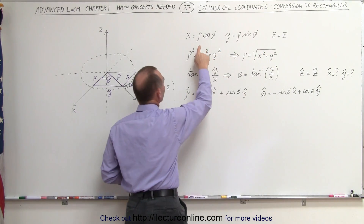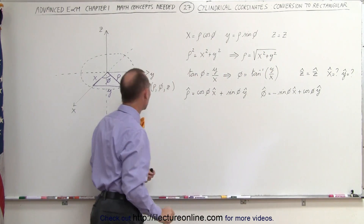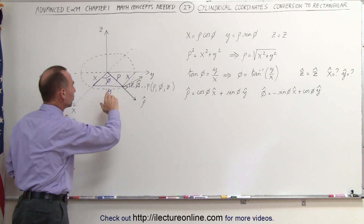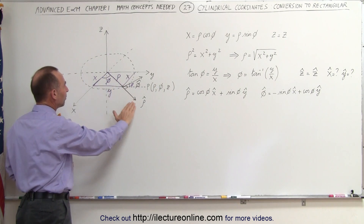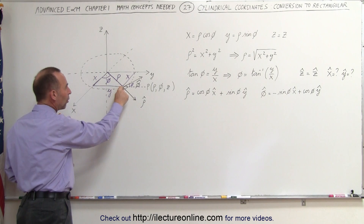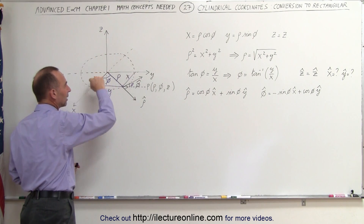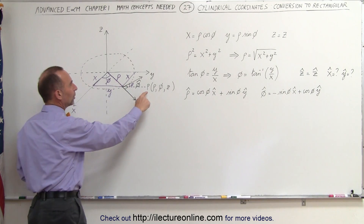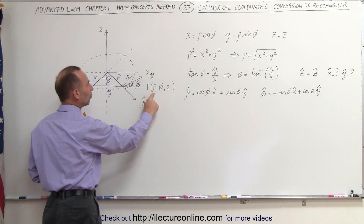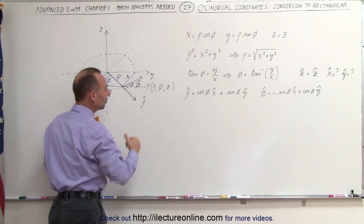But how do we convert from rho and phi to x and y? If we take a look at our cross section here and we look at the xy plane, then we take a point on that plane and draw a circle so that the edge of the circle goes right to the point. The point has coordinates rho, phi, and z. Of course in this case z will be zero.